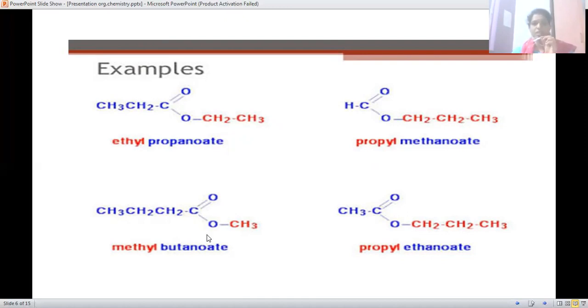These are the structures we call as the methyl butanoate. This is the structure of the butanoate. In this way, this is a very simple form of the propyl ethanoate. This is the two carbon attached. These are the simple examples of the esters.